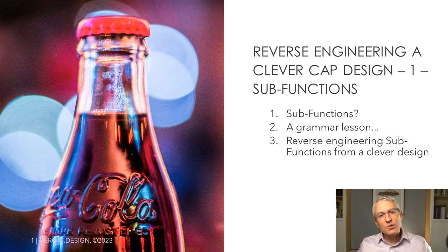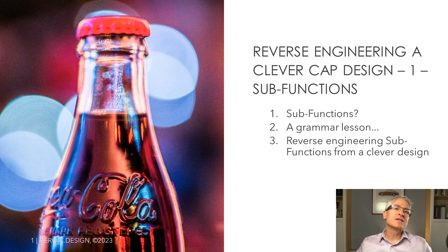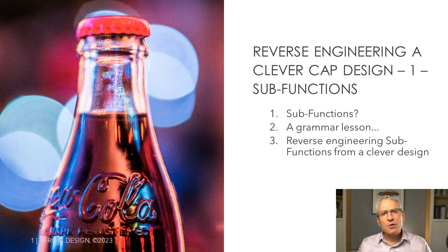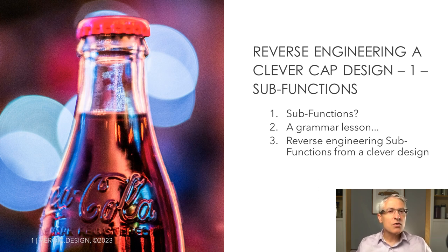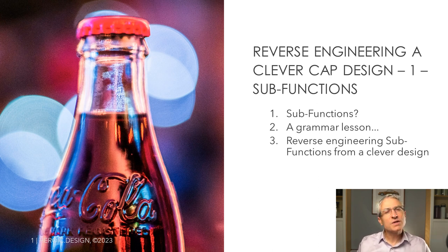So instead of the quick method, we're going to look at the rigorous method. Today we're going to look at sub-functions, which are a rigorous method of breaking down a problem into its parts. Sub-functions help us generate more ideas and better ideas. They also help us integrate those ideas into more coherent solutions. And they help us with design for manufacturability and assembly, which makes our designs less expensive. All of this is good for our users, which means it's good for us as designers.